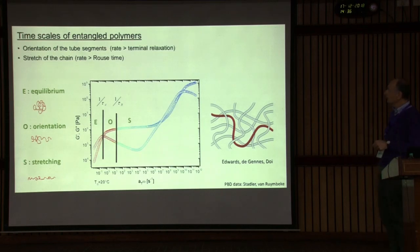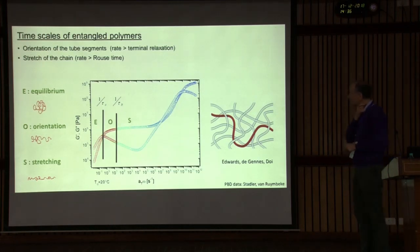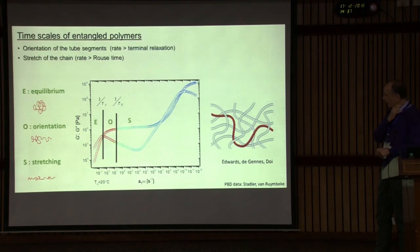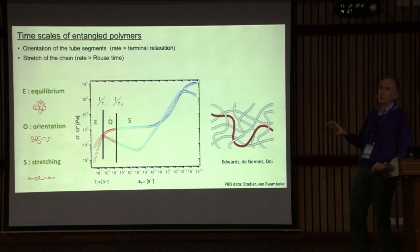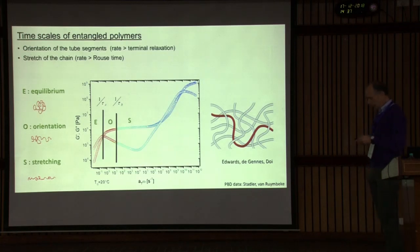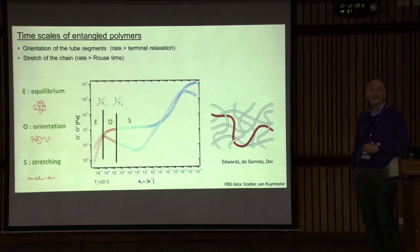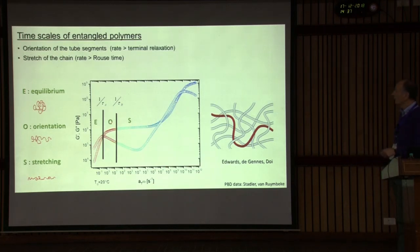To get started, let's see what we know from the linear response. That's a typical mechanical spectrum of an entangled polymer — in this case polybutadiene 1-4. We are interested in the regime of the entanglement network: you have the entanglement plateau and eventually the terminal flow. There are two timescales of interest: the terminal time and the Rouse time of the chain within the tube. There are three regimes — very long times where the chain is equilibrated, the regime between terminal and Rouse time where segments are oriented, and stretching occurs at rates above the Rouse rate.